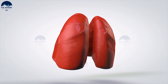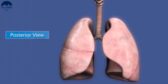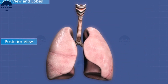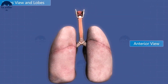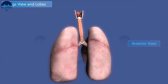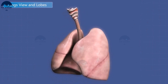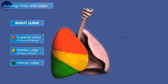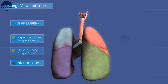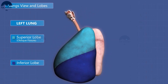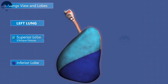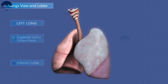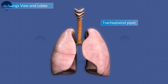The left lung is a bit smaller than the right lung to give space to the heart. The right lung has three sections: the superior lobe, middle lobe, and inferior lobe. The left lung has only two sections: the superior lobe and inferior lobe.